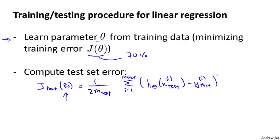So run every test example through your hypothesis with parameter theta and just measure the squared error that your hypothesis has on your m subscript test examples. And of course, this is the definition of the test set error if we are using linear regression and using the squared error metric.